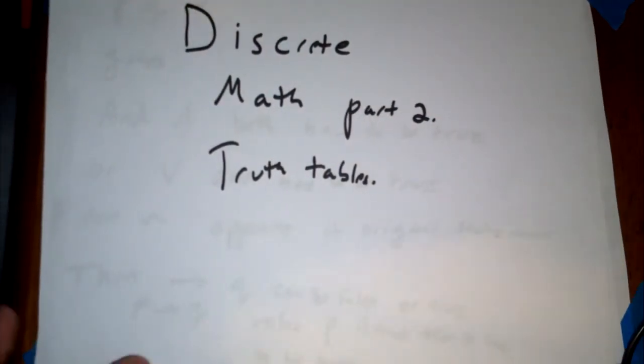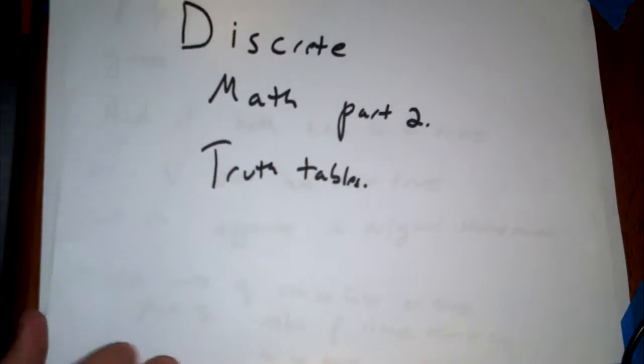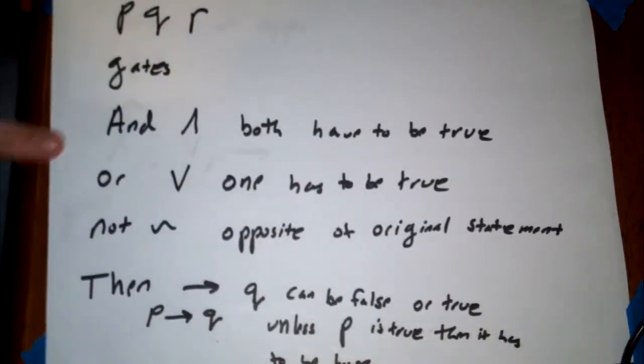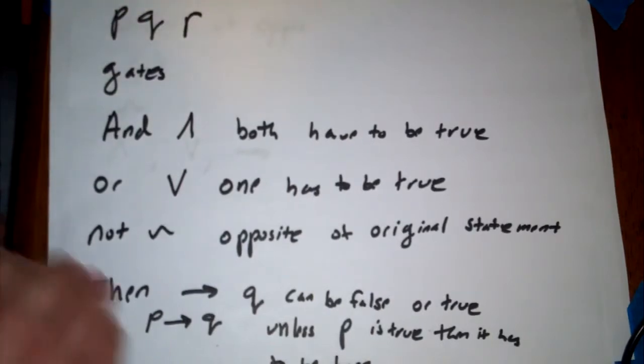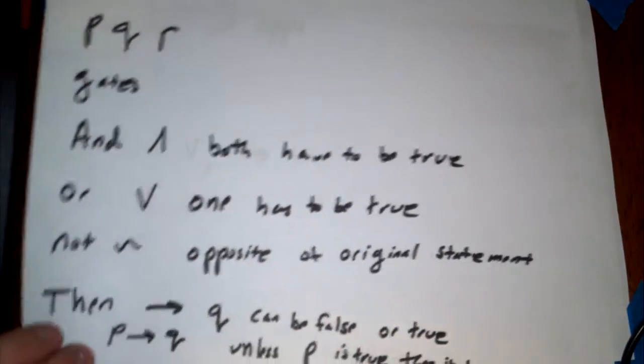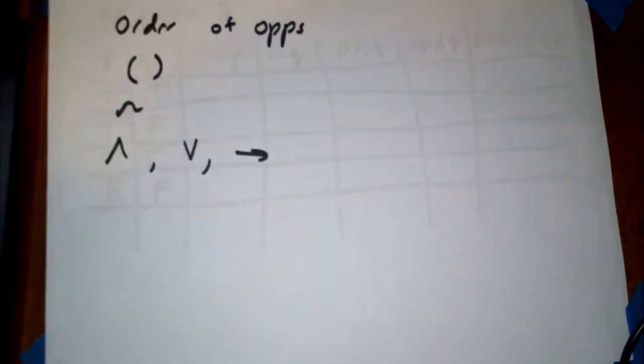Okay, so welcome back. This is discrete math part two. In the last video I went over truth tables and I am Aaron. So let's get started. In the last one I went over AND, OR, NOT, and THEN gates and our basic variable definitions there. So if you're unsure of that, check the previous video.